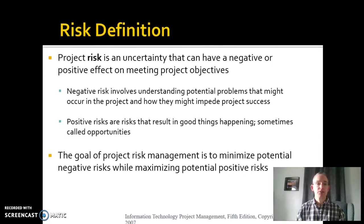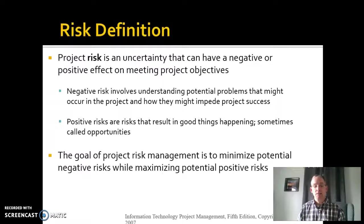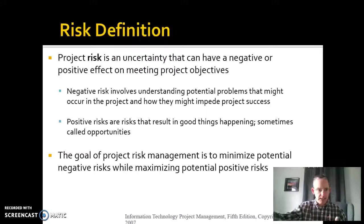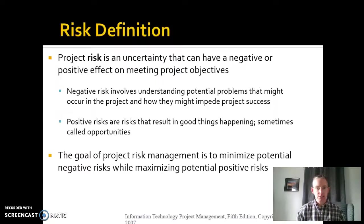So what is risk? It's any uncertainty that can have a negative or potentially positive effect on meeting project objectives. We'll talk a little about positive risk later, but for the most part what we're really concerned about are the negative unknowns. People tend to have a positive vision of what's going to be accomplished — they know what the end should look like. But negative risks get in between you and that vision, so those are the things we're focusing on to minimize.